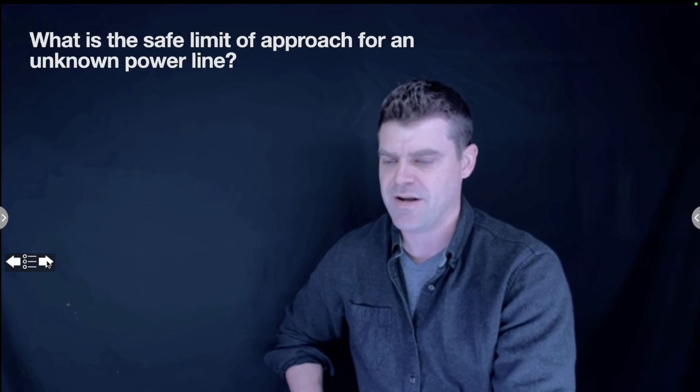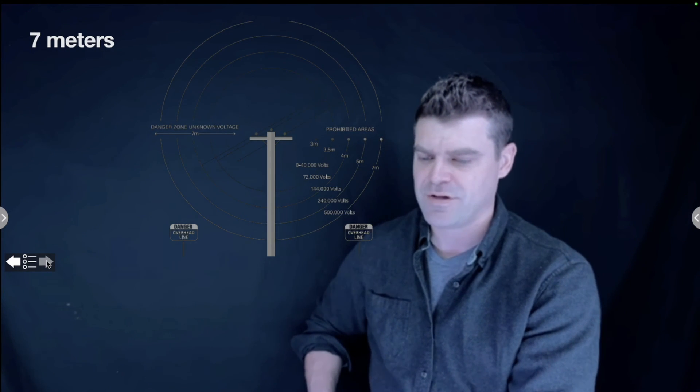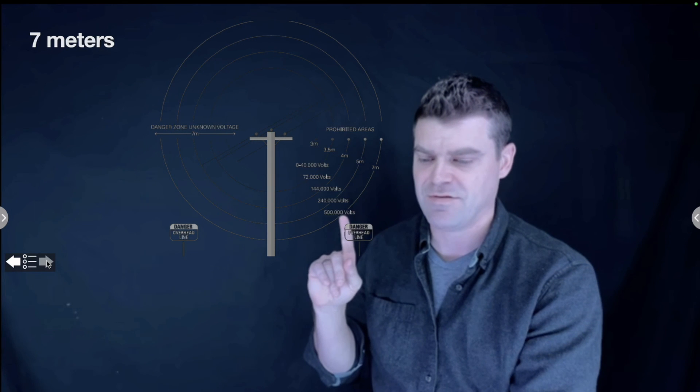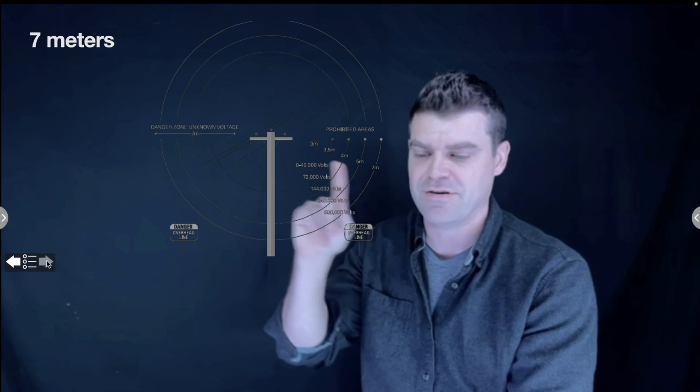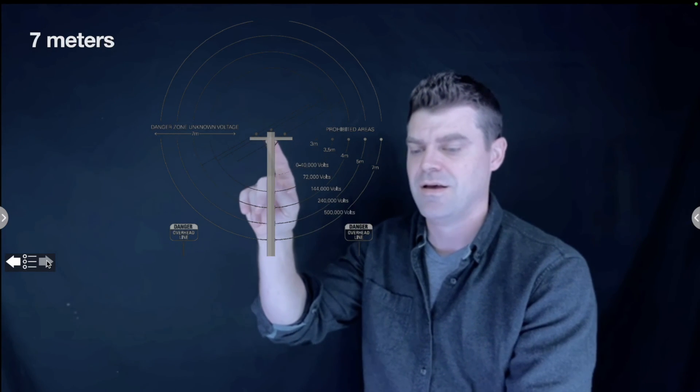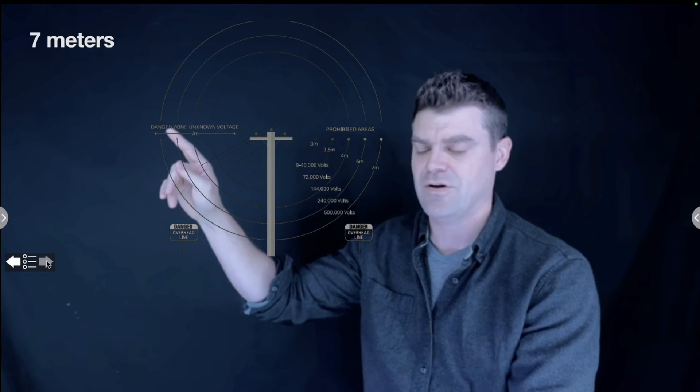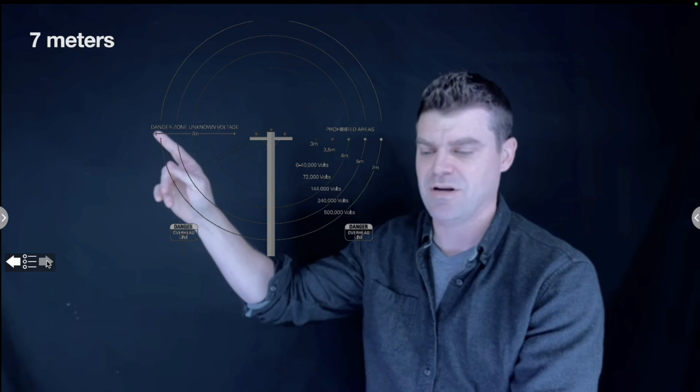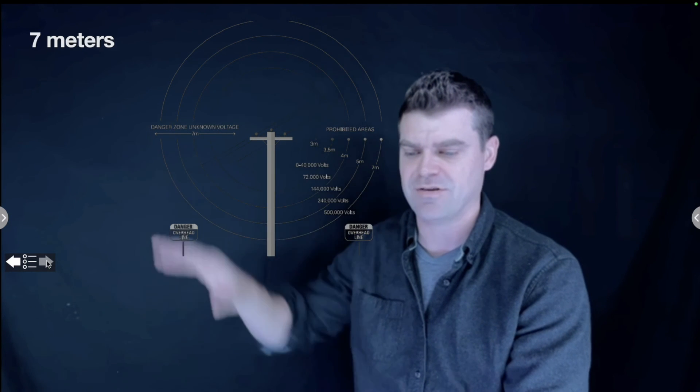Be sure wooden ladders have complete paint covers to prevent water damage. False. You can't see any cracks or any damage to a wooden ladder if it's painted. What is the safe limit of approach for an unknown power line? The answer is seven meters. If you don't know what the voltage is, we have to assume that it's the highest level voltage, which would be 500,000 volts. If it's 500,000 volts, we're looking at seven meters limit of approach before the electricity will jump to the nearest thing. If we don't know what the voltage is, we just assume that it's seven meters. If you're working around cranes, man lifts, or anything like that, make sure you don't go within seven meters of a power line.